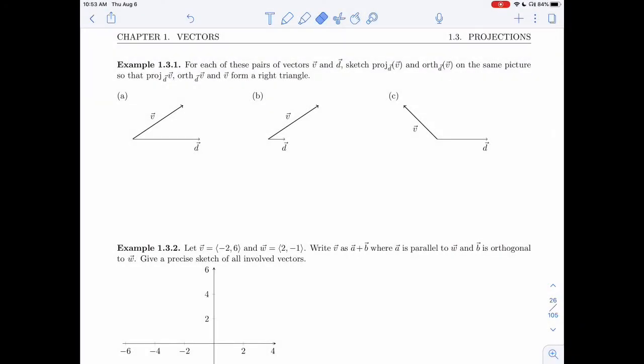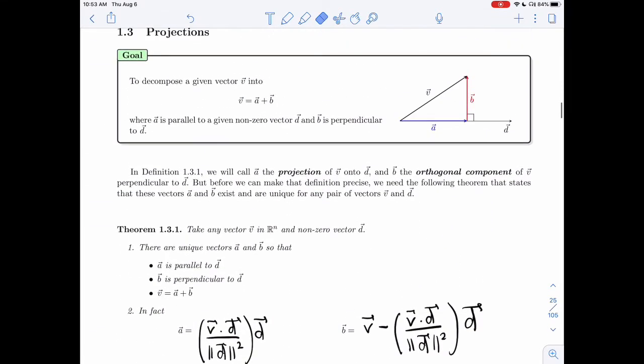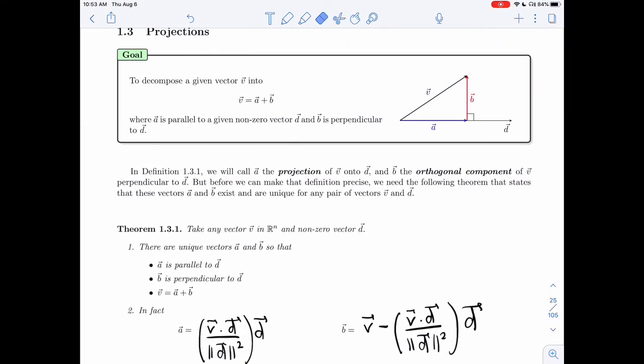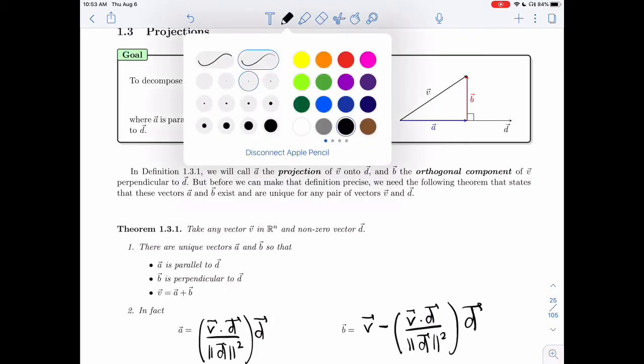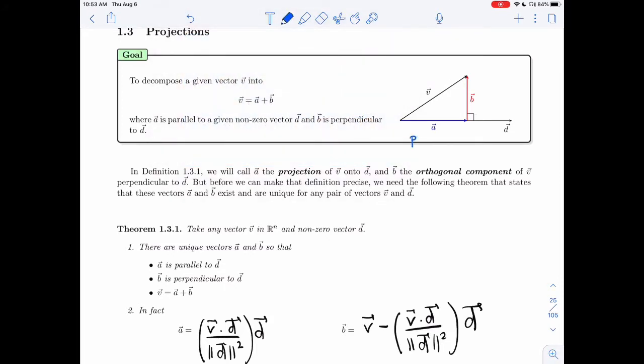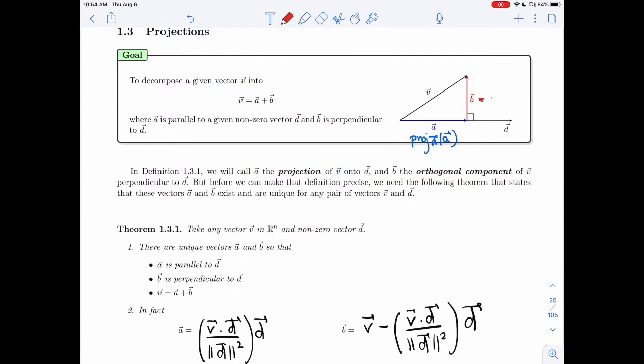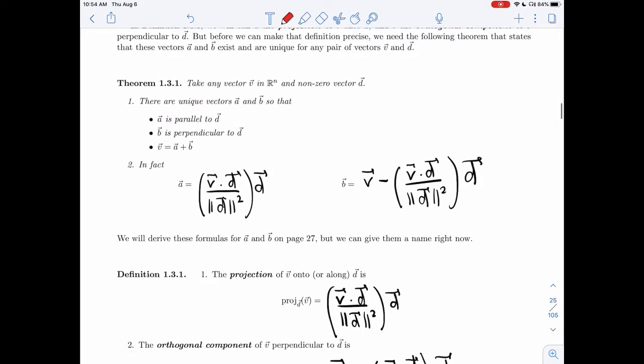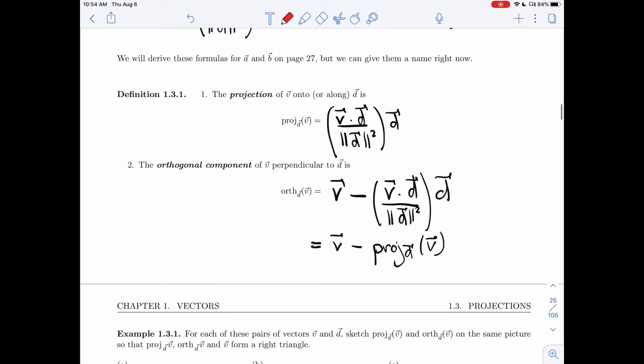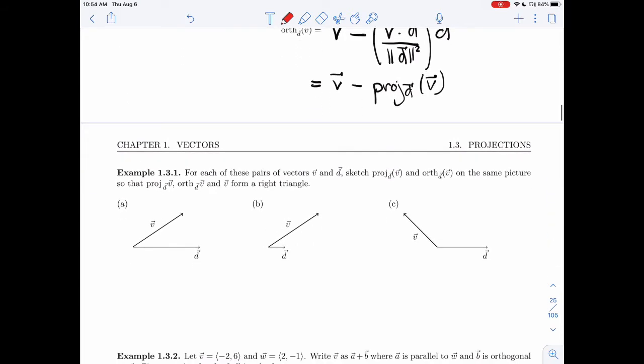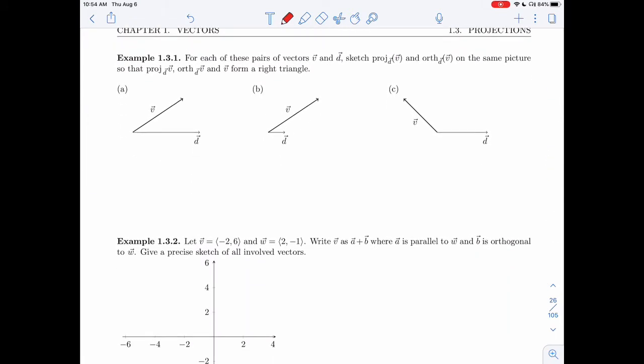In this video, we'll be looking at two examples of projections. Remember in the previous video, we looked at how to decompose a vector V into two parts: A, which we call the projection that needs to be parallel to D, and B, the orthogonal component of V perpendicular to D. We have formulas for them right here, and now we're going to find them for a specific vector V and D.